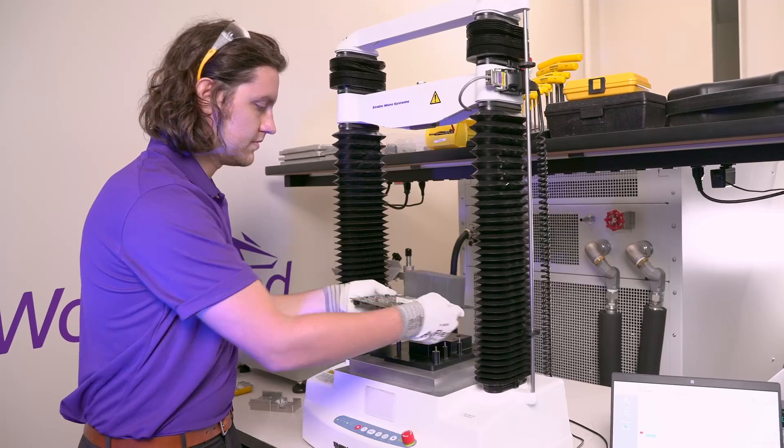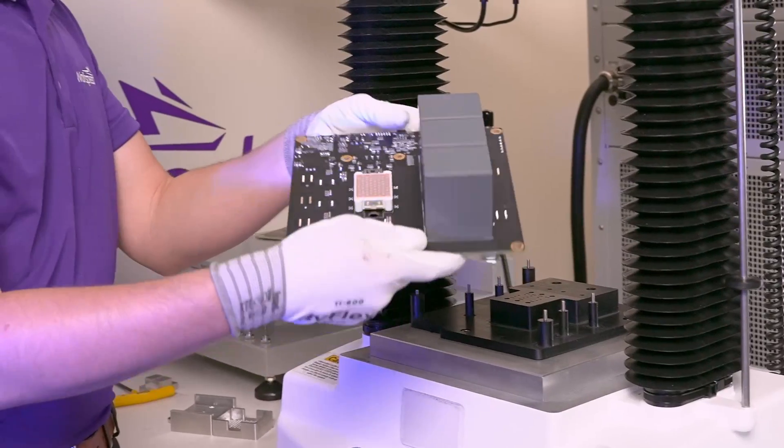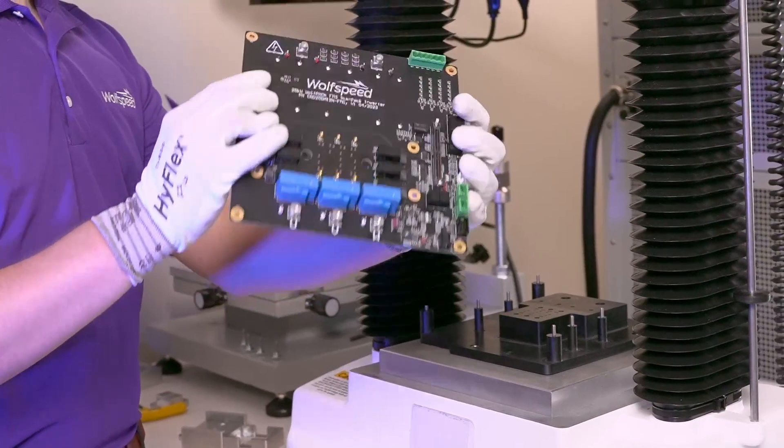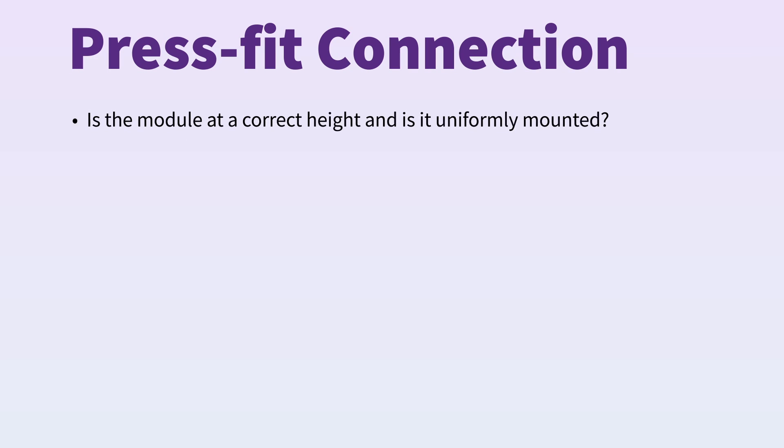Once it is safe to do so, remove the PCB assembly from the fixturing and carefully observe the quality of the press-fit connection. Is the module at a correct height and is it uniformly mounted? Do the pins protrude evenly through the PCB? Are the module and PCB undamaged?